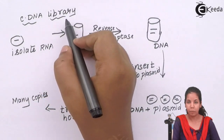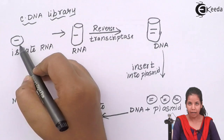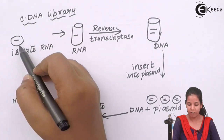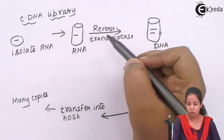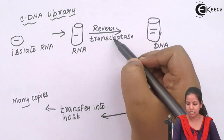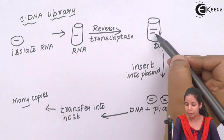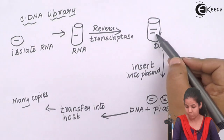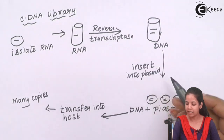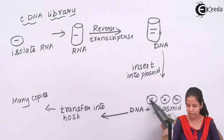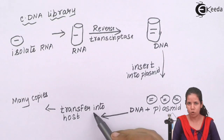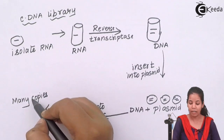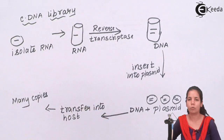The steps of cDNA library making: place the single-stranded RNA in a test tube, add the enzyme reverse transcriptase, and you obtain double-stranded DNA. This double-stranded DNA is inserted into a plasmid, which is circular and small. The double-stranded DNA along with the plasmid is then transferred into a host cell, such as E. coli or yeast, and you get multiple copies.